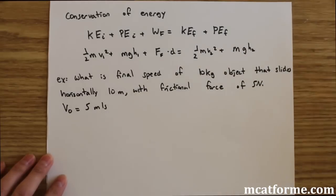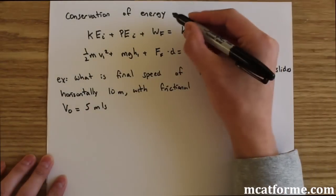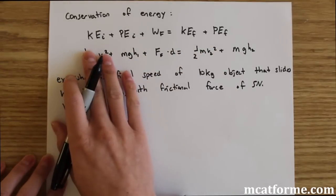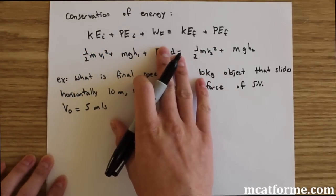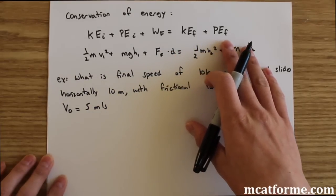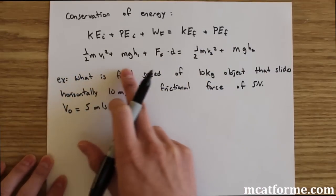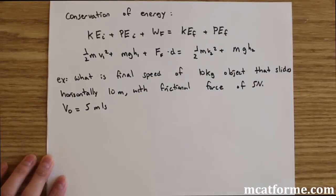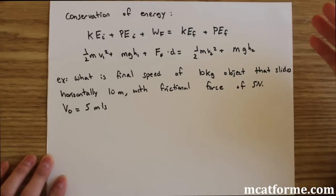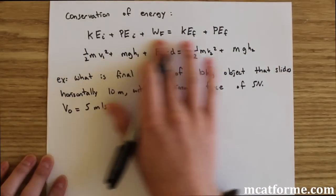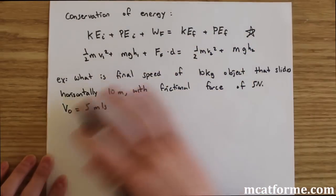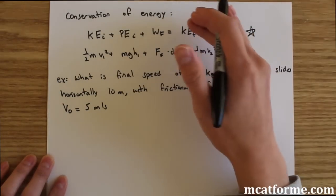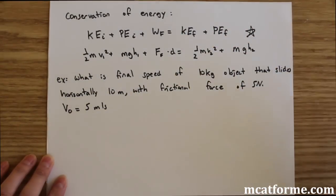Conservation of energy is very important. The full equation is: kinetic energy initial plus potential energy initial plus the work done by friction equals kinetic energy final plus potential energy final — that is, one half mv squared plus mgh plus frictional force times distance on each side. If you memorize this one equation, you can eliminate whichever terms don't apply and it covers all conservation of energy problems.